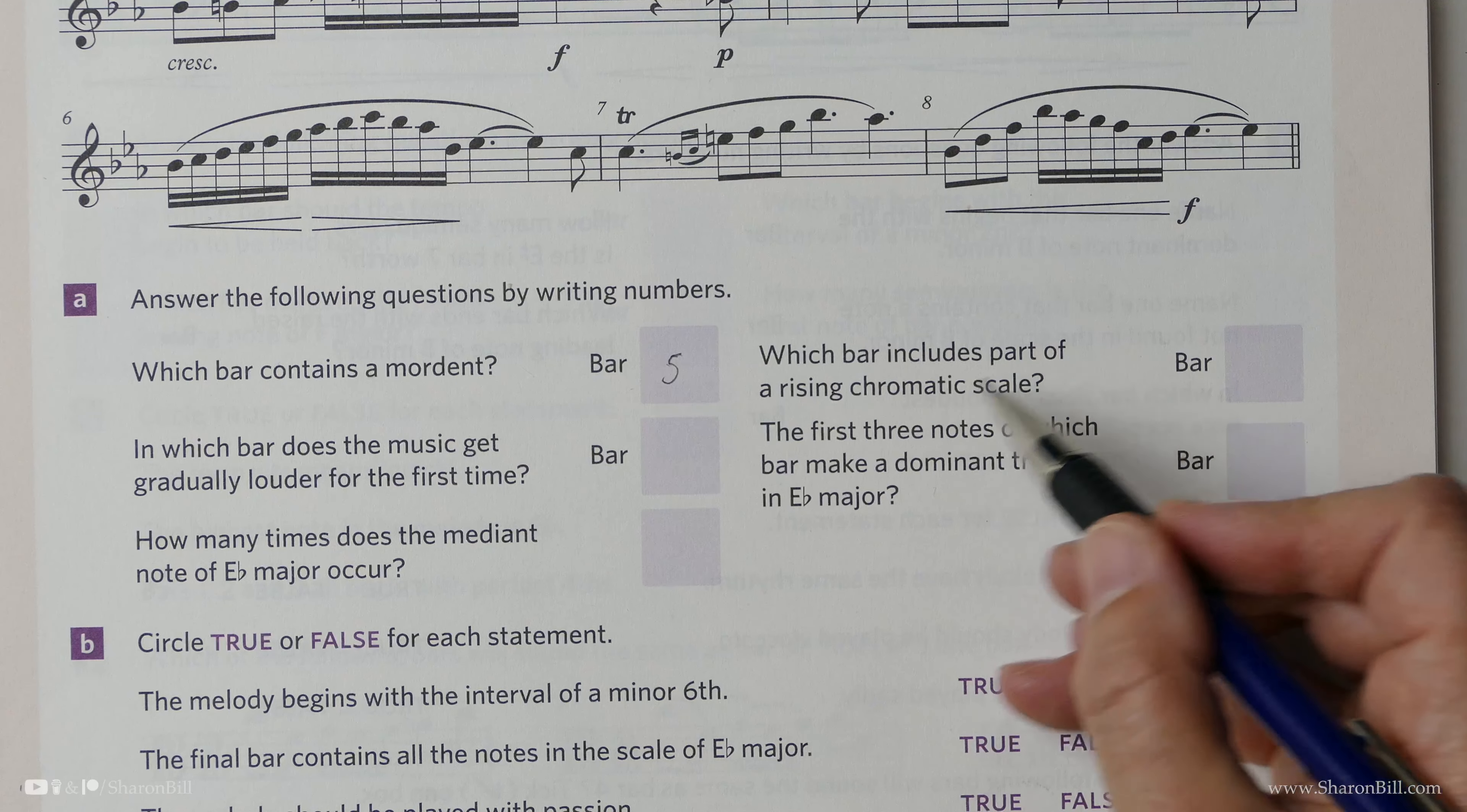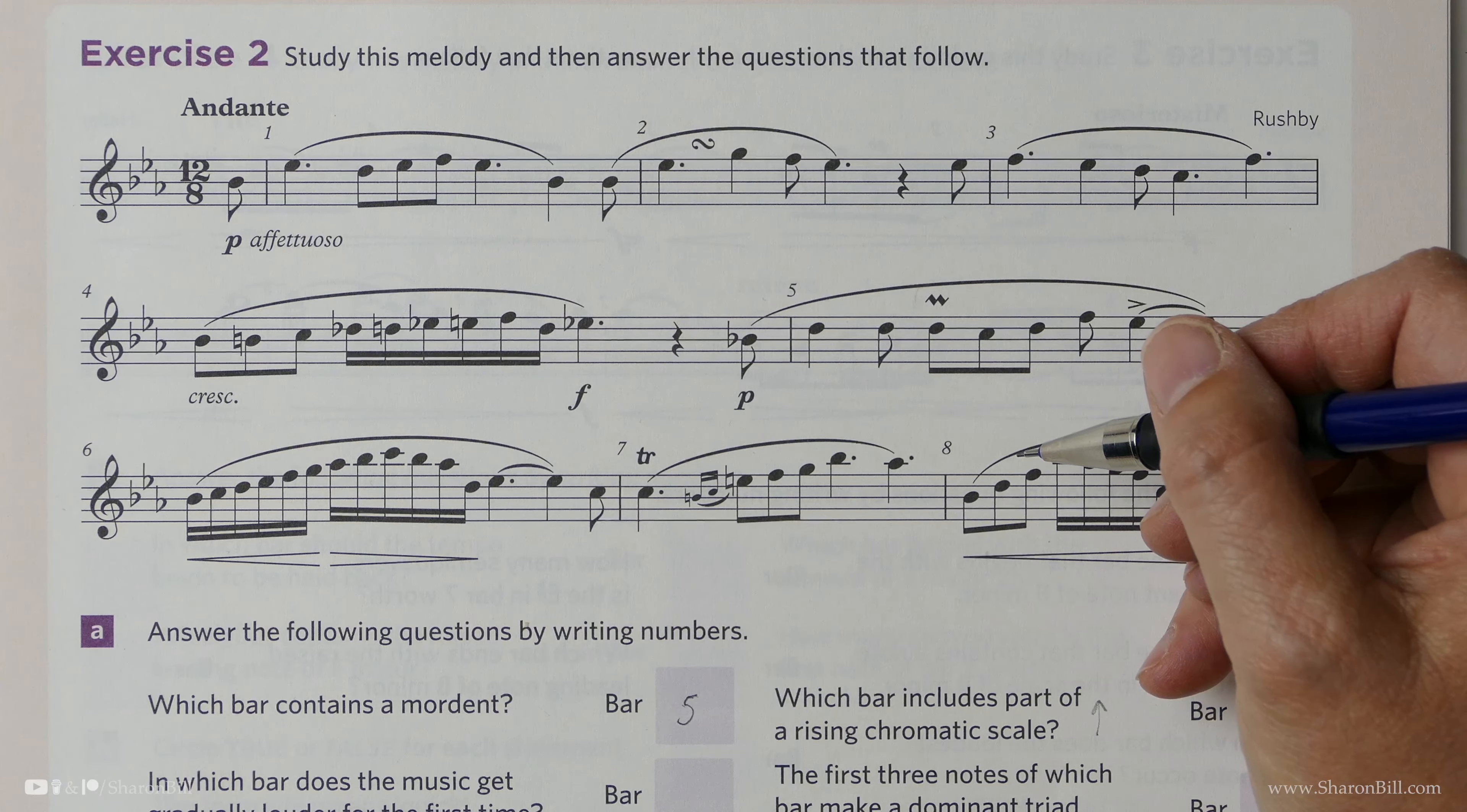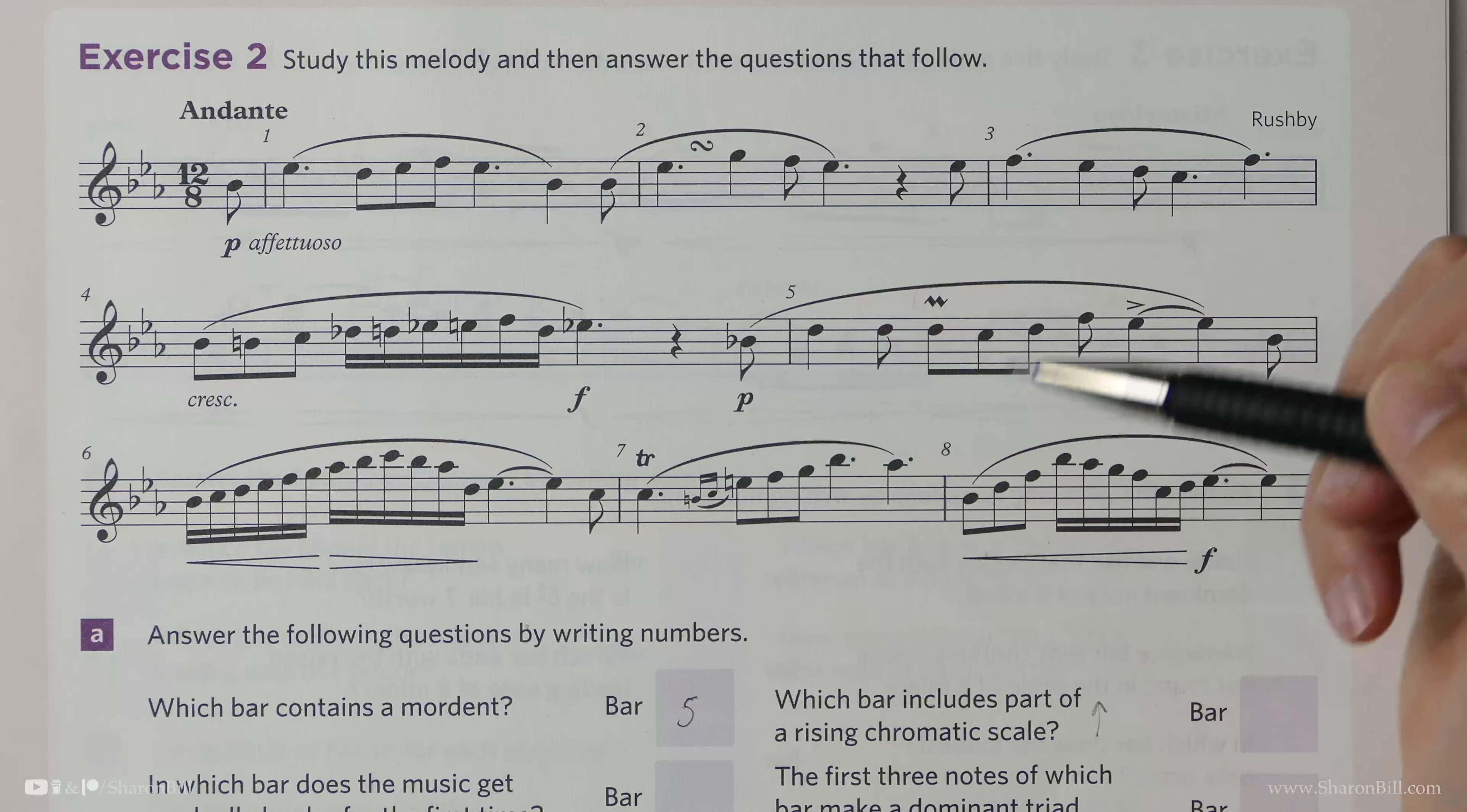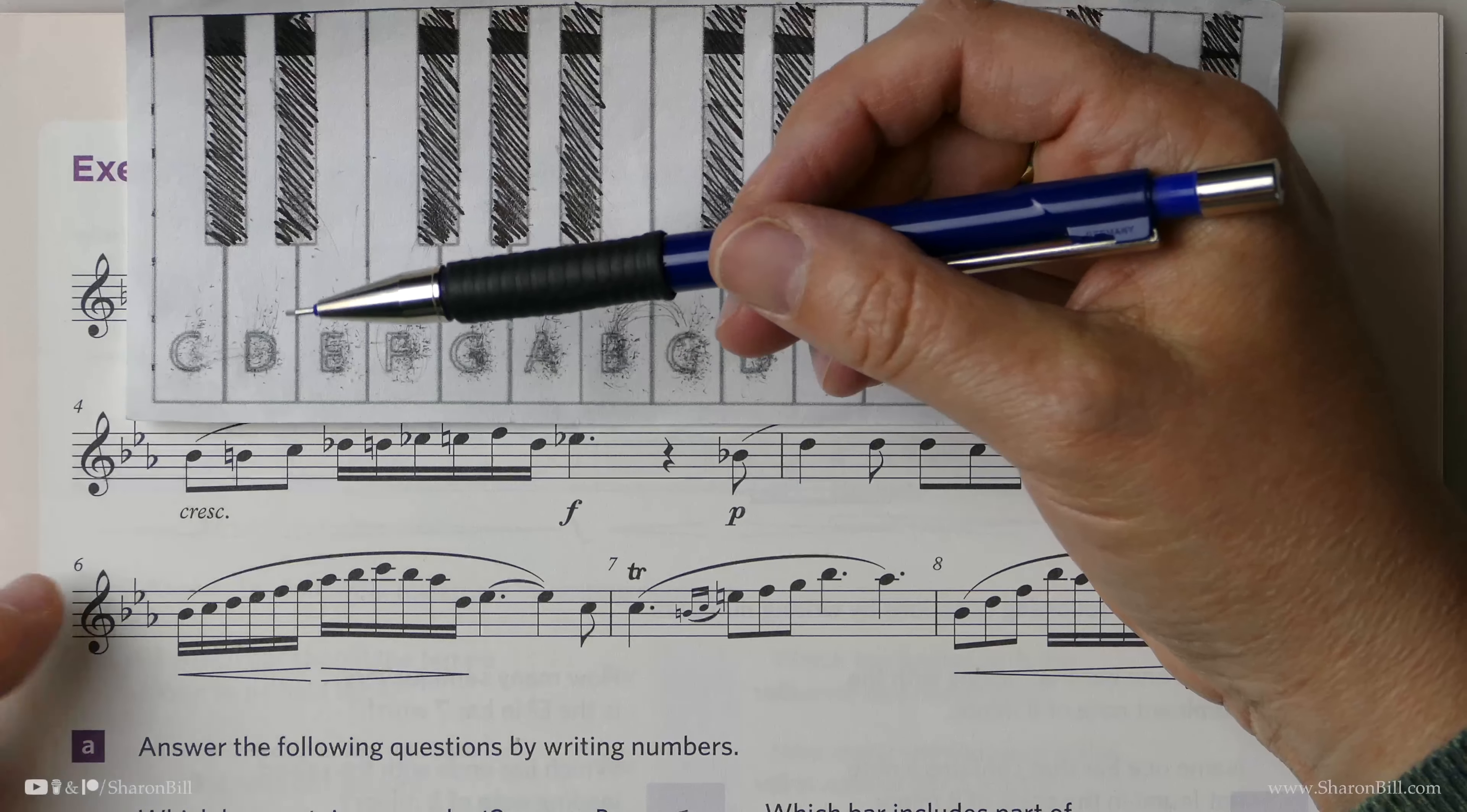Which bar includes part of a rising chromatic scale? So music going upwards in semitones. And rather than just scouring through every single note, we can kind of get the hint of what we're looking for just by looking for lots of accidentals when we're looking for chromatic sections. Because we're going to have to keep adding sharps, flats, or naturals, and so on. And so I suggest this is a good place to start. And this is where having your piano keyboard really helps.